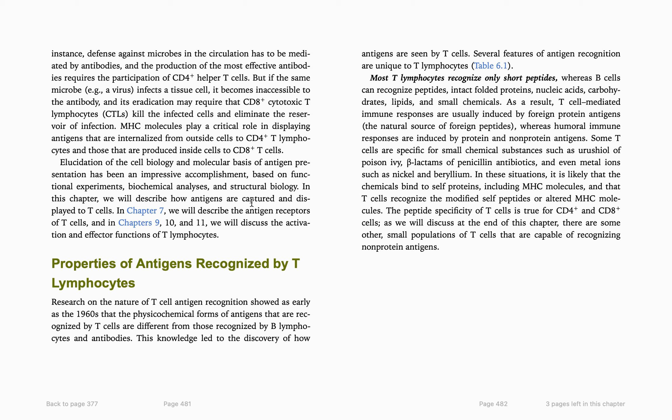Antigen uptake by dendritic cells leads to antigen presentation to naive T cells, triggering a response. Macrophages can also present antigen, leading to killing of bacteria. B cells can do the same. So dendritic cells, macrophages, and B cells are all antigen presenting cells. When a dendritic cell contacts a naive T cell, naive T cell activation, clonal expansion, and differentiation into effector cells occurs. Effector T cells can then activate macrophages for cell-mediated immunity or activate B cells for antibody production.